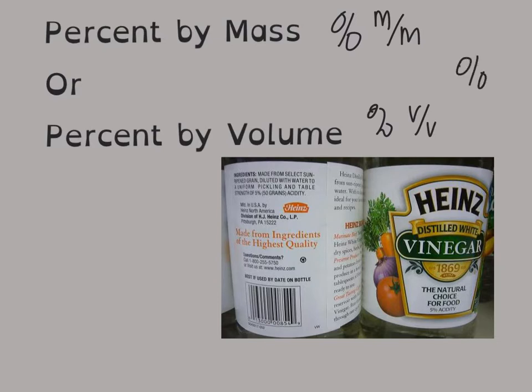You will see this most often when you are reading labels. In this case we have a vinegar label, and it's telling us that it's 5% acidity. Depending on if this is by mass or by volume, it would be 5 milliliters of acid per 100 milliliters of solution, or 5 grams of acid per 100 grams of solution.